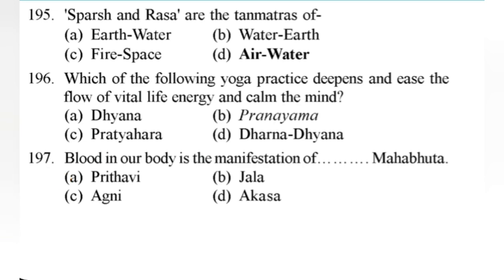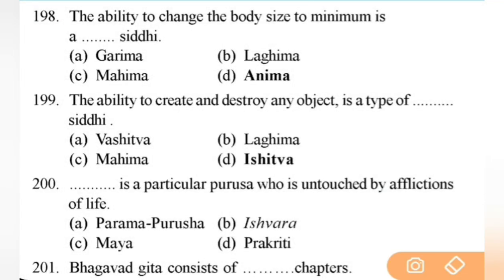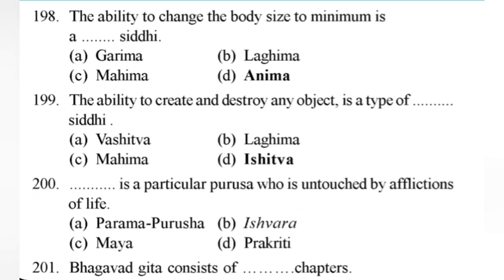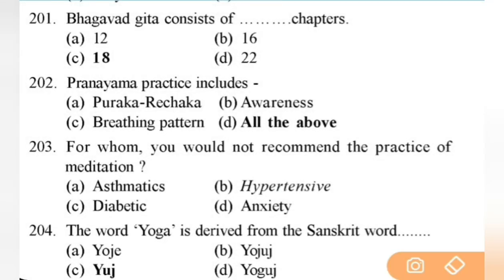The ability to change the body size to minimum is — right answer is D — Anima Siddhi. Next: the ability to create and destroy any object is a type of — right answer is D — Ishitva Siddhi. Next: Ishwara is a particular Purusha who is untouched by afflictions of life. Next: Bhagavad Gita consists of 18 chapters. Next: pranayama practice includes all of the above — Puraka, Rechaka, awareness, and breathing patterns — important.